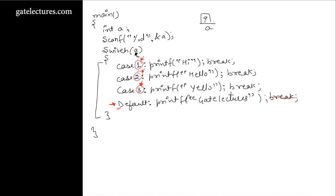Let us suppose instead of 9, the user entered the number 1. When the user enters 1, it matches with case 1. In case 1, we have the printf statement "hi". After this printf statement, we have a break statement, so this is going to print "hi" and then the break statement tells the program counter not to move on to the next statement — that means come out of the switch statement.